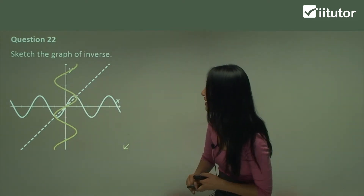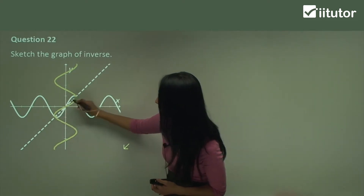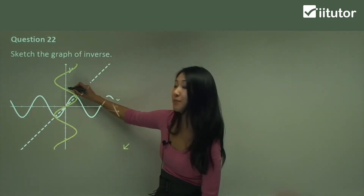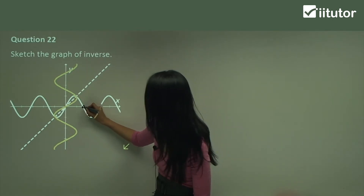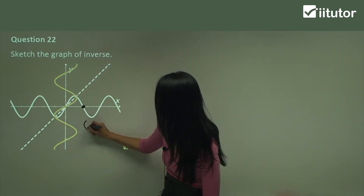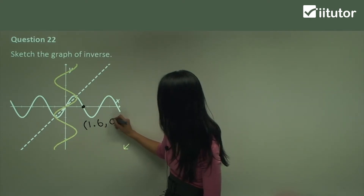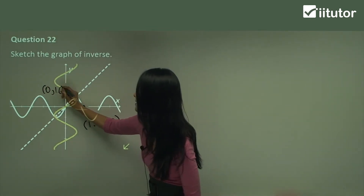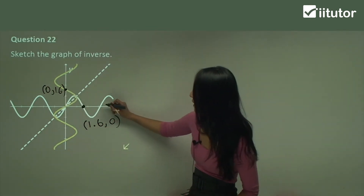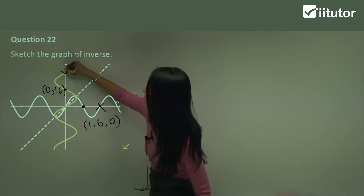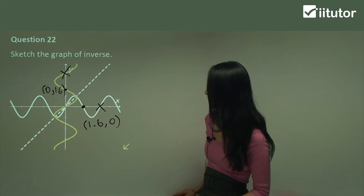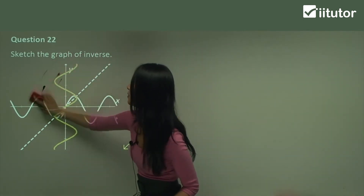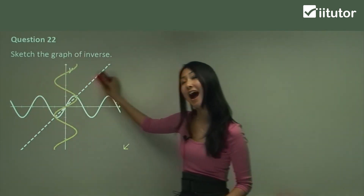And the other good point to note is it's going to cross at the same points on y equals to x. And this point here is going to correspond to that point there. So if we say this point is approximately 1.6, 0, then this point here is going to be 0, 1.6, and so on. So this point here corresponds to that point there. So if you do get confused, I just want you to separate the graph into either above or below the dotted line, or the left and right hand side, and then flip that, and then you can check your values and also where it crosses y equals to x.